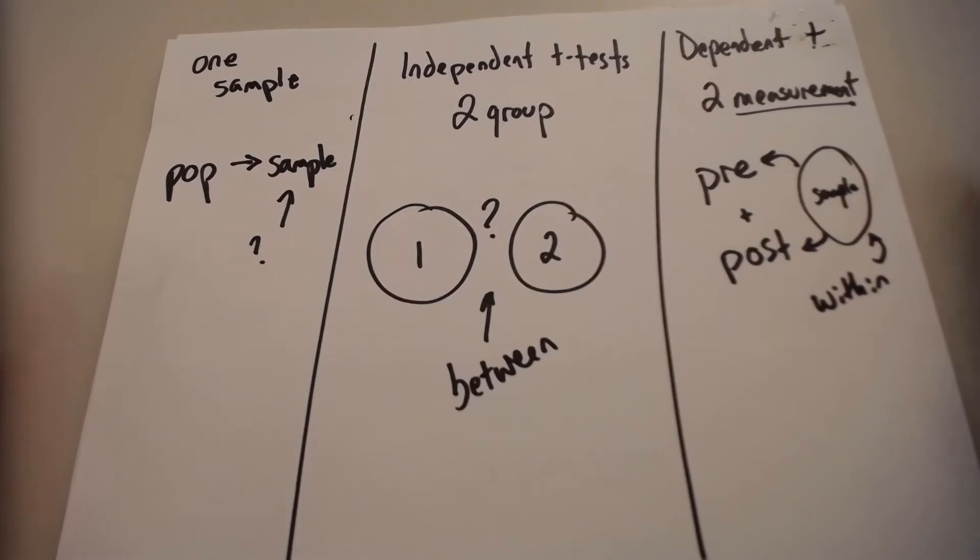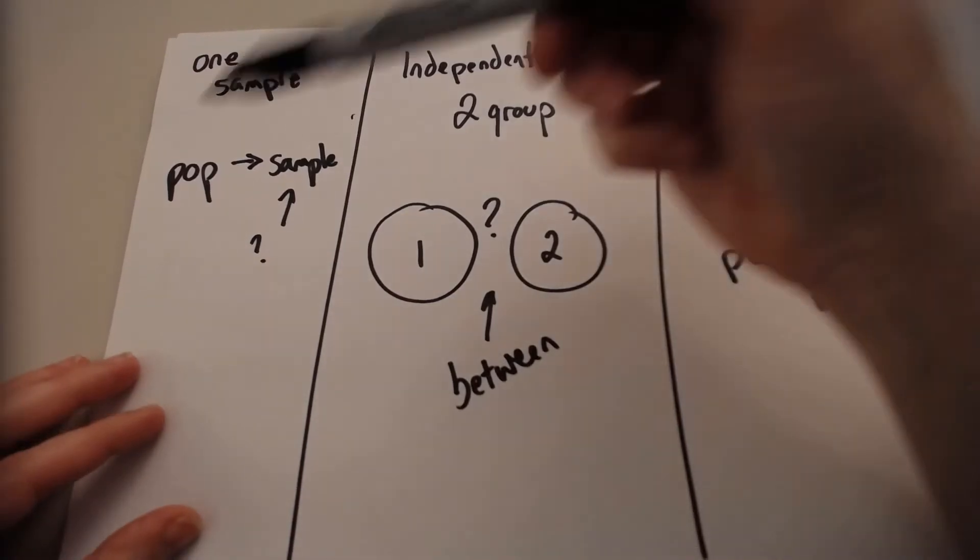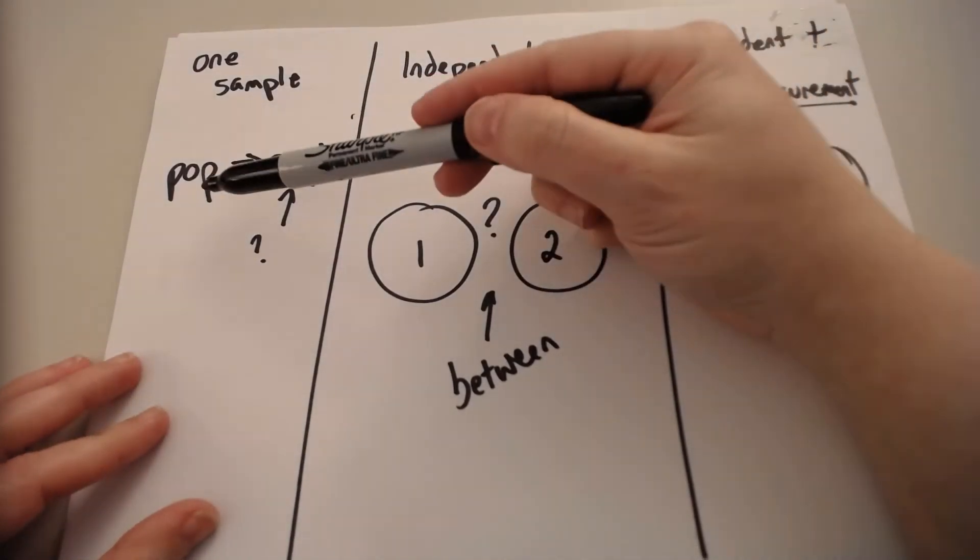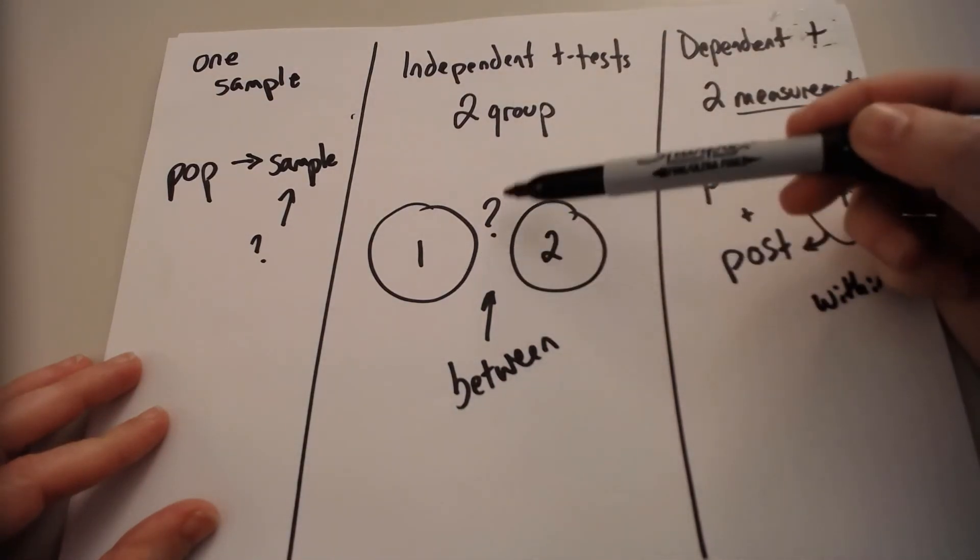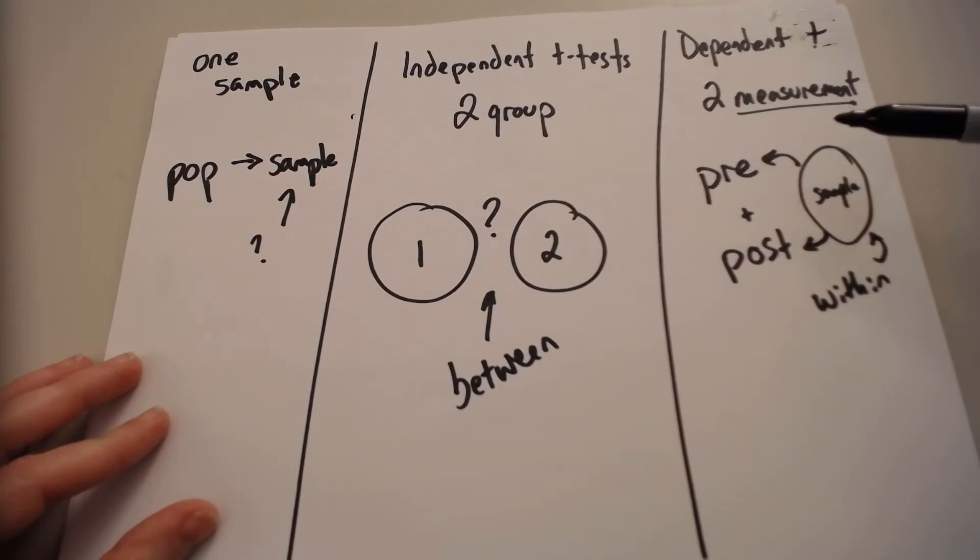So again, t-tests look at two things, either a single sample compared to a population, two groups and looking for a difference between them, or two measurement points like a pre- and post-test in the same sample. Those are three kinds of t-tests that we'll be discussing more in this unit.